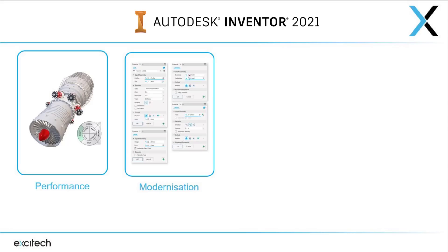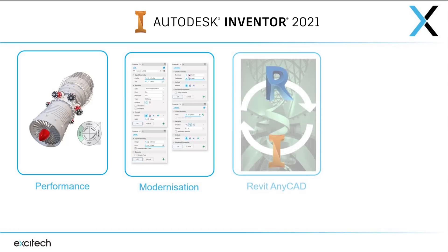This year, updating tools such as Coil, Thicken and Offset, and Delete Face. After a lot of requests Autodesk have also incorporated a Dark theme, which I'll be using throughout this video and will continue to use day to day as a nice addition to the software. They have also improved the interoperability between Inventor and BIM models, which we will come onto later in the video.